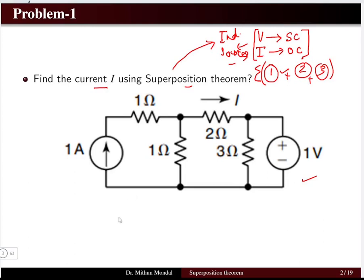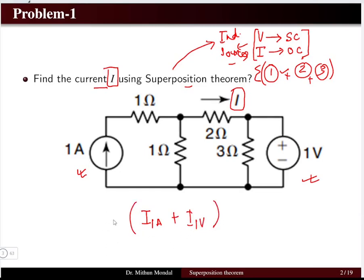This is the first problem. Here we have a 1 ampere current source and a 1 volt voltage source — both independent. We have to obtain the current I, which is the current flowing through the 2 ohm resistor. I have to obtain the current when only the 1 ampere current source is there, then when only the 1 volt source is there, and then add both to obtain the net current in the network. That is the superposition theorem.